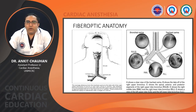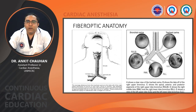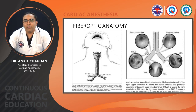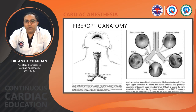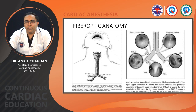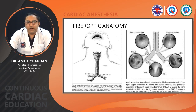Fiberoptic anatomy review: at the tracheal carina, the openings of the right and left main stem bronchi are visible. Going right, the bronchial carina shows the right upper lobe bronchus opening; entering the right upper lobe bronchus reveals three openings — apical, anterior, and posterior segments. Further down the right main stem bronchus are the right middle and lower lobe entries. On the left side, there are two openings for the left upper and lower lobes. This fiberoptic anatomy is essential for adequate positioning of the DLT or bronchial blocker.